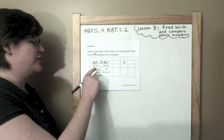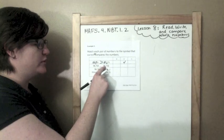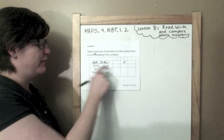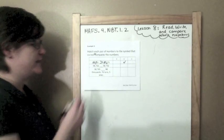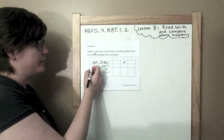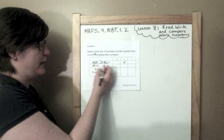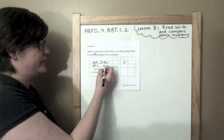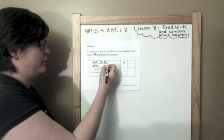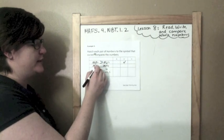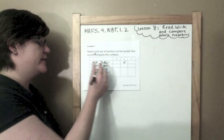Next, count the digits: 1, 2, 3, 4, 5 and 1, 2, 3, 4, 5 — they both have 5 digits. Now it's time to compare. 9 and 9, the same. 8 and 8, the same. 7 and 7, the same. 6 and 5 — which one is greater? The 6.